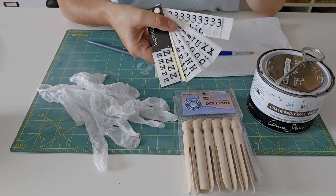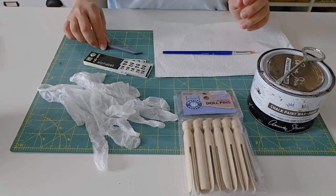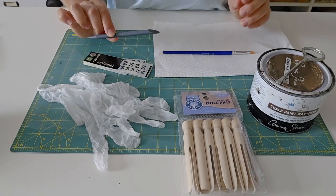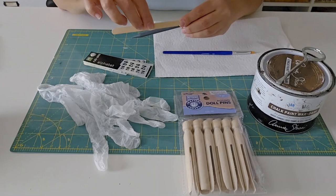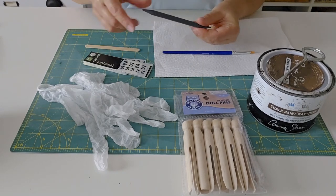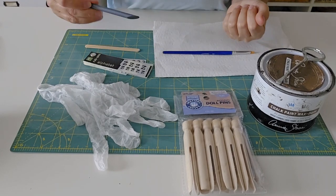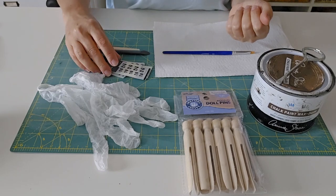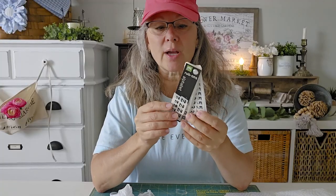The rub-ons will come with a little craft stick or a plastic stick to literally buff or burnish them onto your project. Just a word about these rub-ons, like I said I used to be a scrapbooker so I have a lot of supplies that I just hung on to over the years.